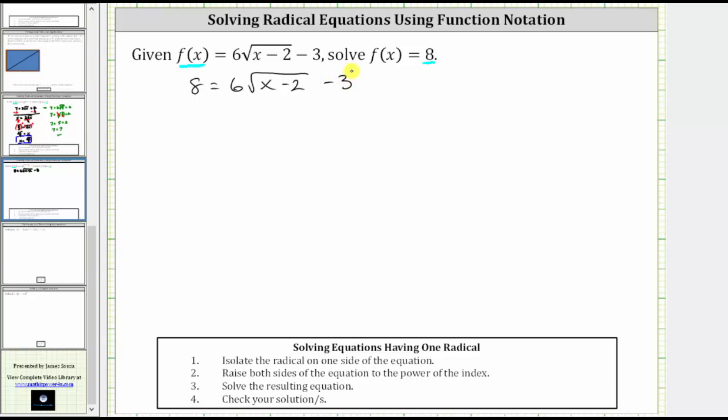Now to solve the square root equation, we first isolate the square root, and therefore let's begin by adding 3 to both sides.